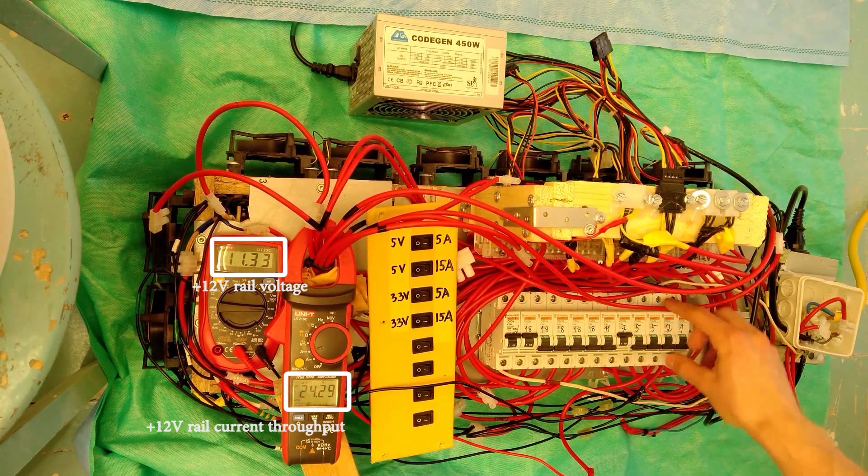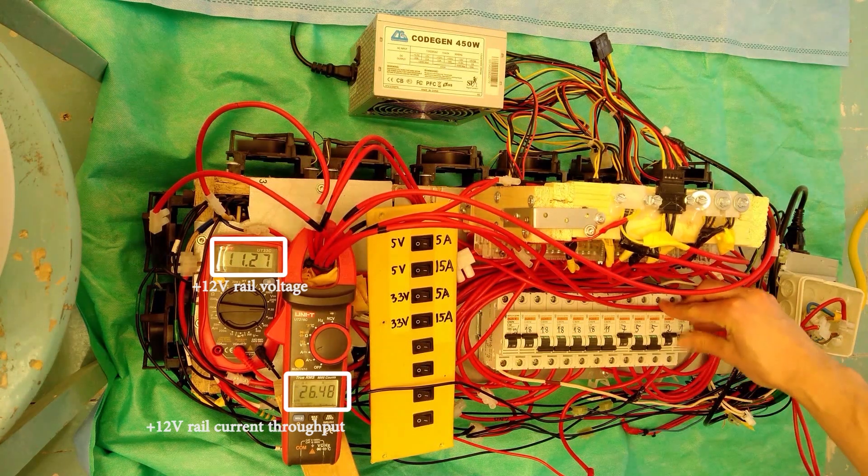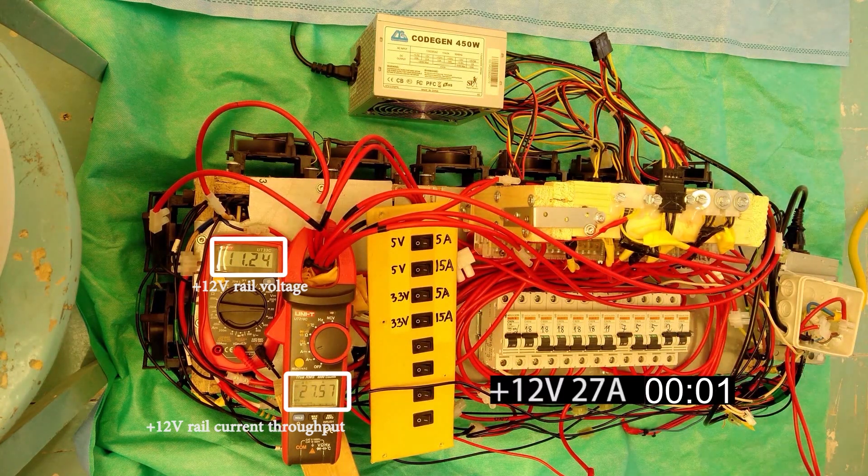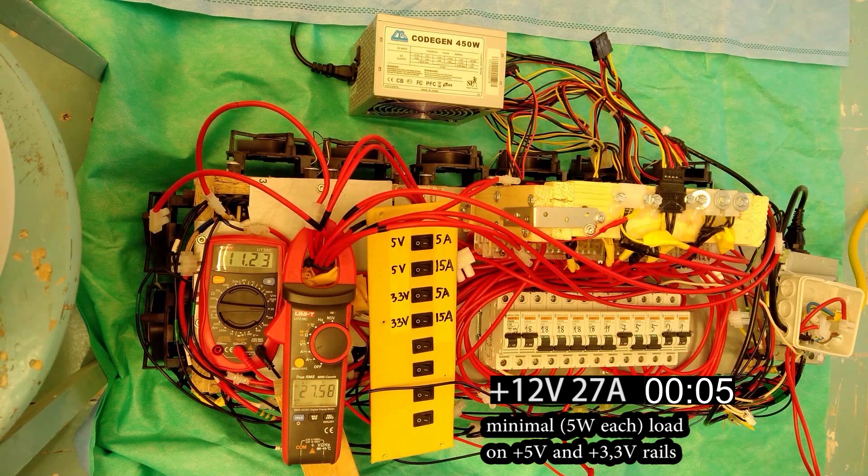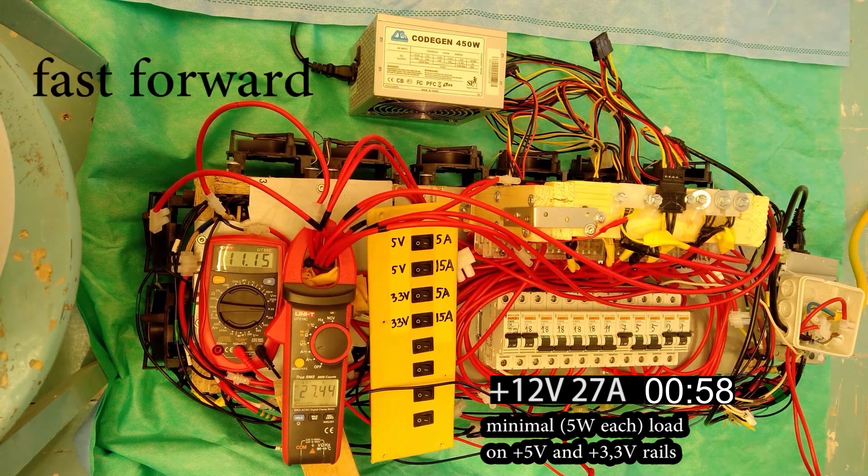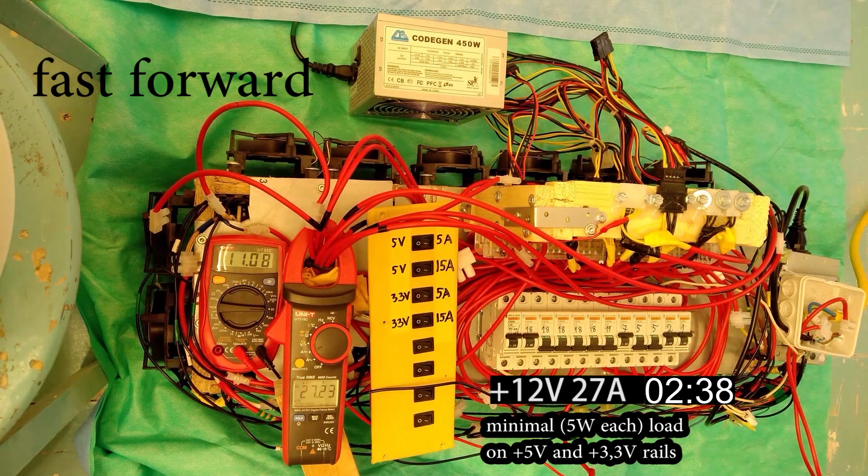The overload protection on the 12 volt rail activates at 28 amps so we'll do the testing with 27 amps. First I'll only load the 12 volt rail with a minimal load on the 3.3 and 5 volt rails.